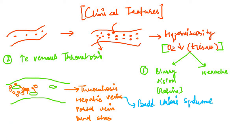The third clinical feature is plethora — a clinical finding in which the patient's face appears congested and red. This is because of the increased circulation and increased number of RBCs within the circulation, making the patient look congested and red.